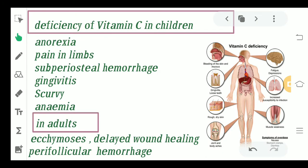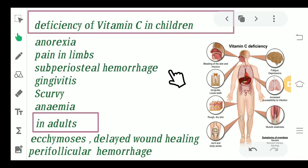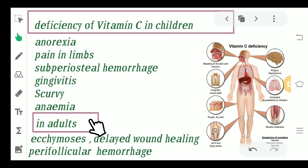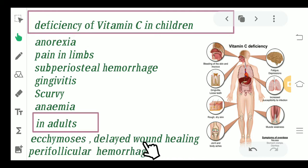Coming to the deficiency of Vitamin C — what challenges can be faced if you are not taking enough Vitamin C? They can include anorexia, pain in the limbs, sub-periosteal hemorrhage, gingivitis, scurvy, and anemia in children. In adults, in addition to all these features, there can be ecchymosis, delayed wound healing, and perifollicular hemorrhage.